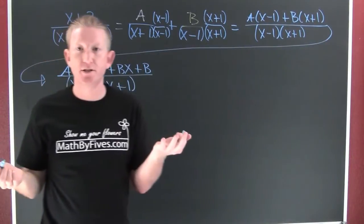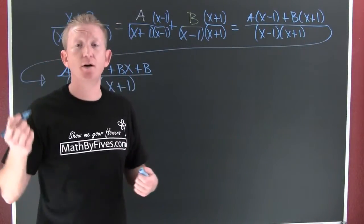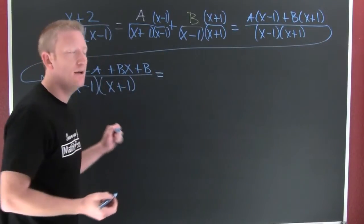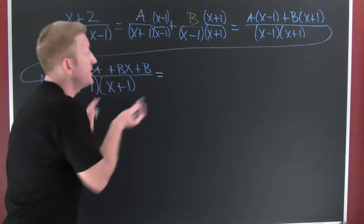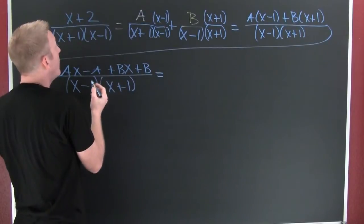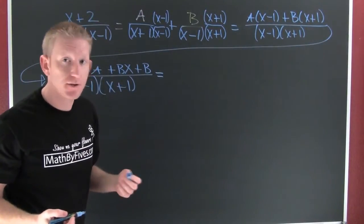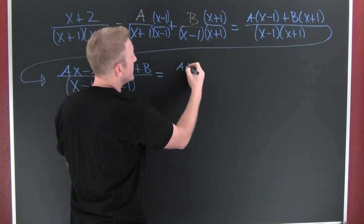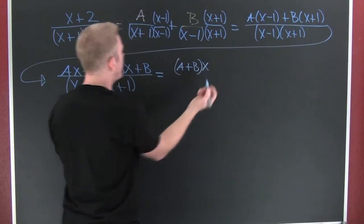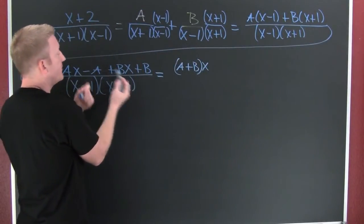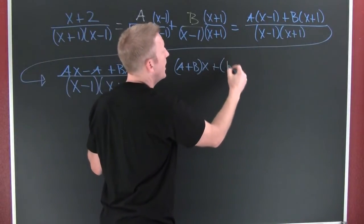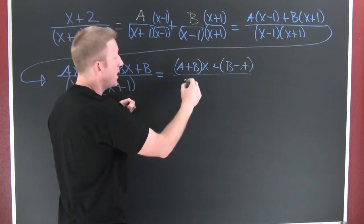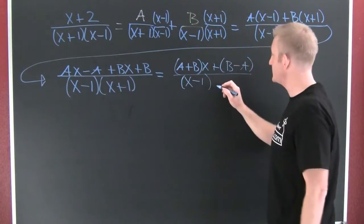Now I'm using the traditional method — there is somewhat of a shortcut method if I let x be zeros of the denominator, but I don't like that. What I intend to do is match the coefficients on each one of those terms — that's how those two polynomials are going to be equal. So I have A plus B times x, and then this is going to be plus B minus A, all over that common denominator, X minus one times X plus one.